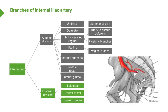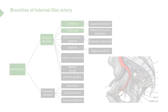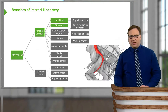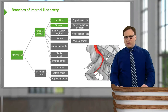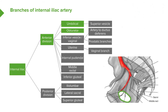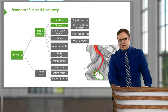The more complicated division is the anterior division, coming down in a more anterior direction. It gives rise first to the umbilical and the obturator artery. The obturator artery supplies the medial compartment of the thigh and exits the pelvis through the obturator canal — an aperture in the obturator fascia filling the obturator foramen. Also passing through are the obturator nerve and obturator vein, all supplying the medial adductor compartment of the thigh.